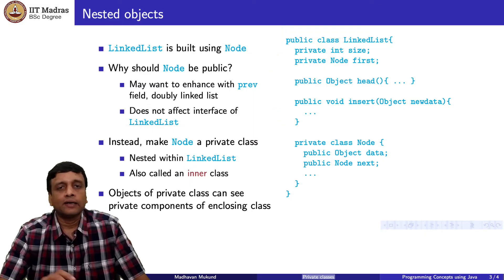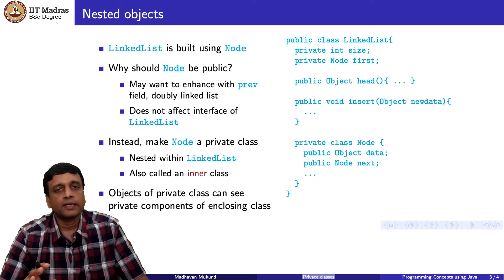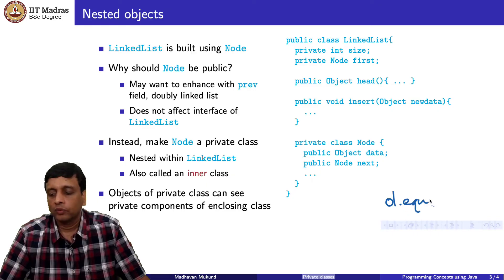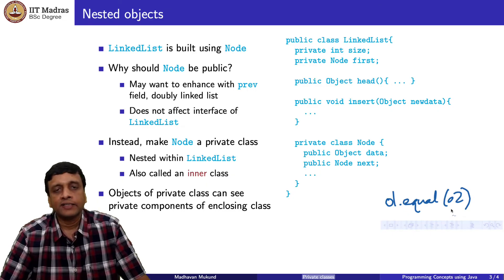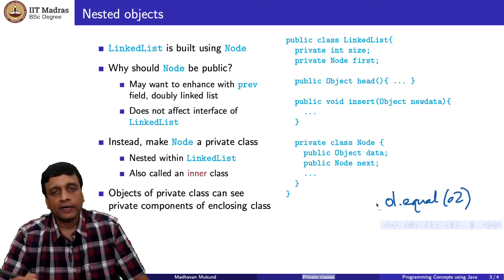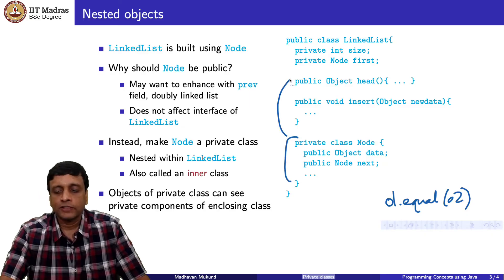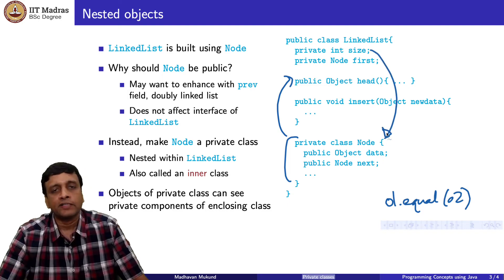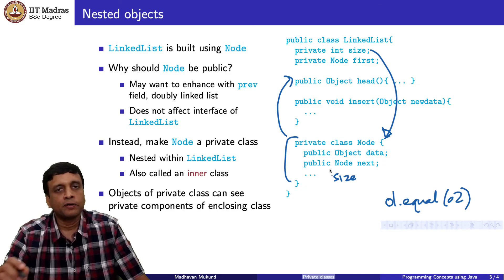One thing to remember: when we have a private instance variable inside a class, all objects of that class can see each other's private variables. For instance, if we want to compare two objects — say, o1.equals(o2) — o1 must be able to look at the private values of o2. So a private variable is not private within the class, only private outside it. Similarly, this private inner class is accessible inside linked list, and conversely, the private class can also see the other private instance variables of linked list, such as size.